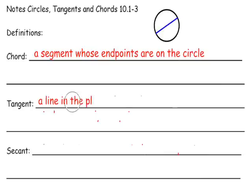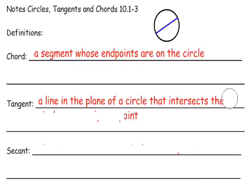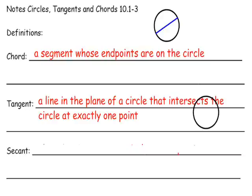Let's talk about tangents. A tangent is a line, ray, or segment in the plane of a circle that intersects the circle at exactly one point. So it would look like a circle with a line that intersects at exactly one point — that point would be the point of tangency and the line would be the tangent line.